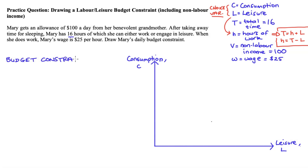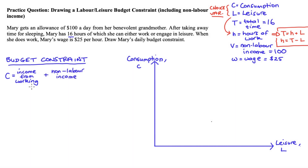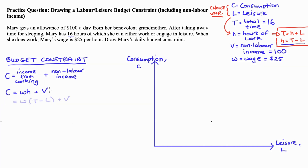We can then start writing our budget constraint. There is no savings here, so Mary will use all of her income to consume. So C, consumption, will be equal to all of the income that Mary gets from working plus any non-labor income. The total income from working equals the wage rate W multiplied by hours worked H, and we add to that non-labor income V. So C equals W times H plus V. It is useful to have consumption as a function of L, so we substitute H equals T minus L: C equals W times (T minus L) plus V.